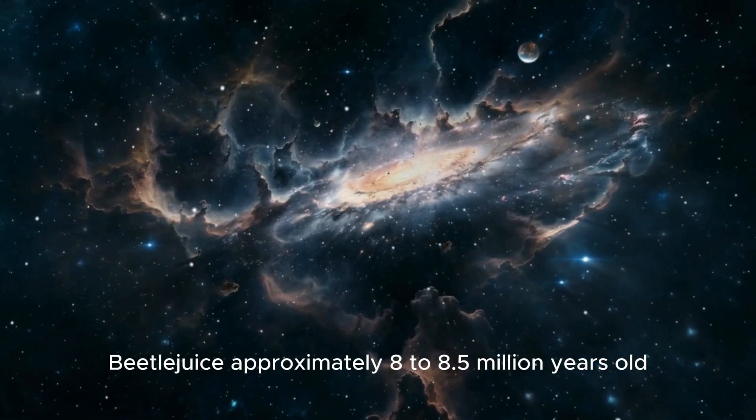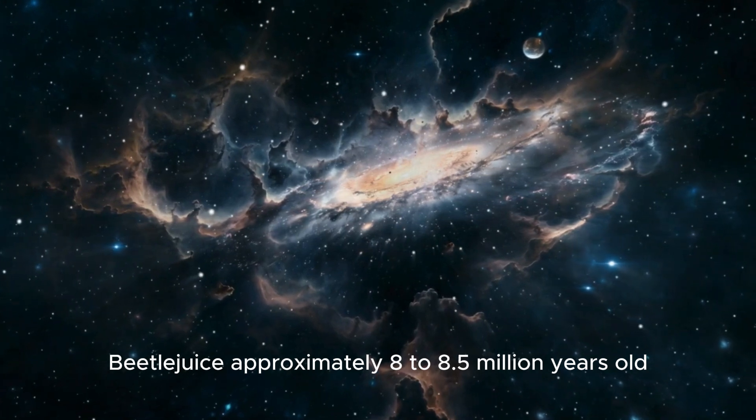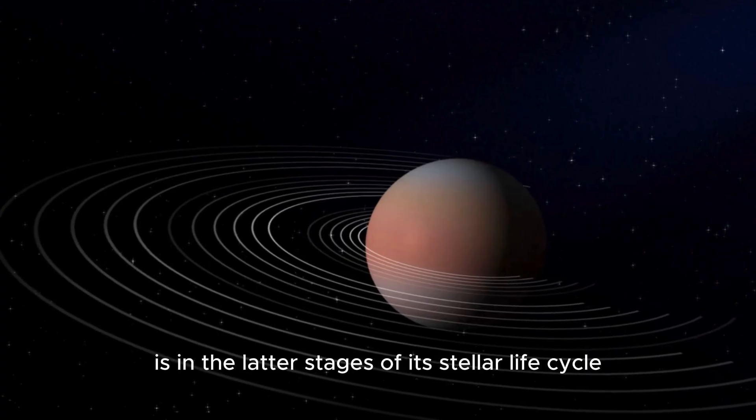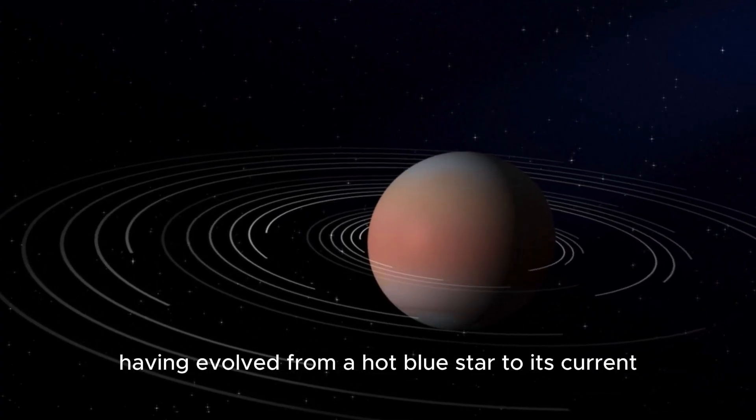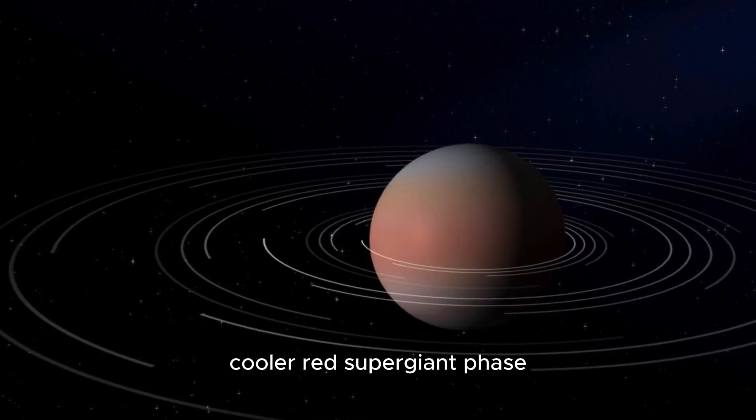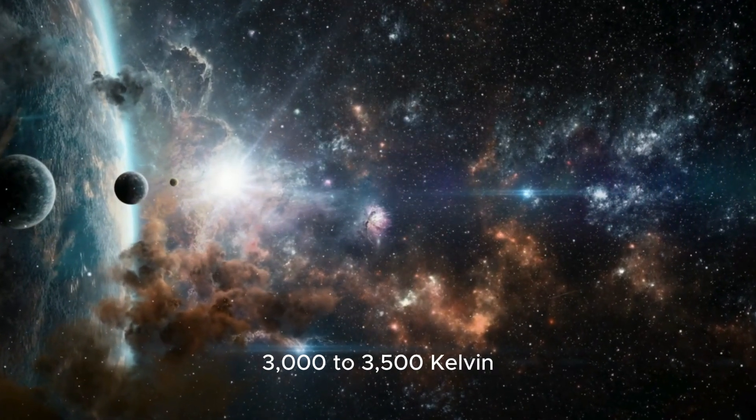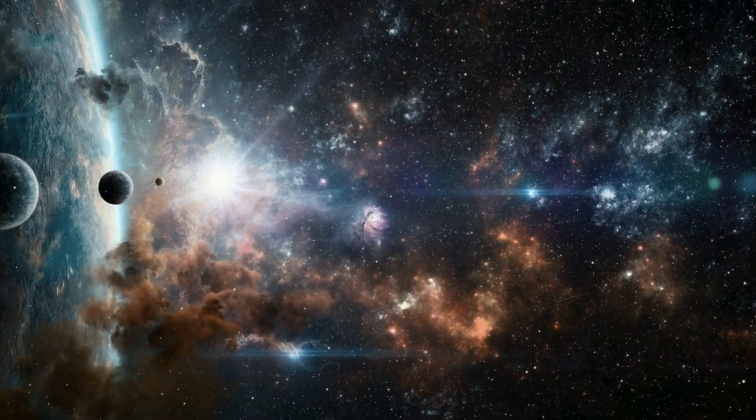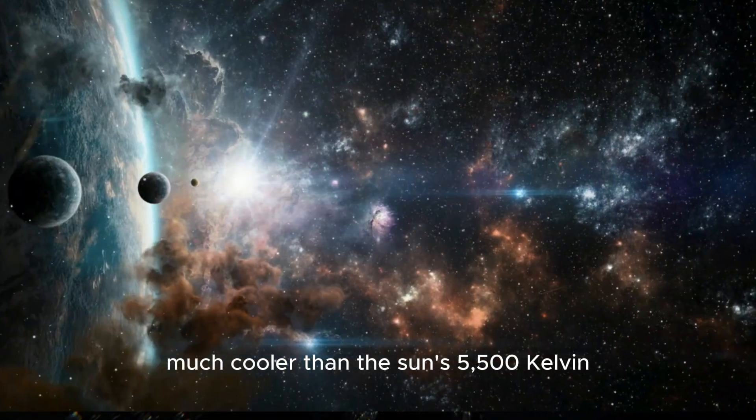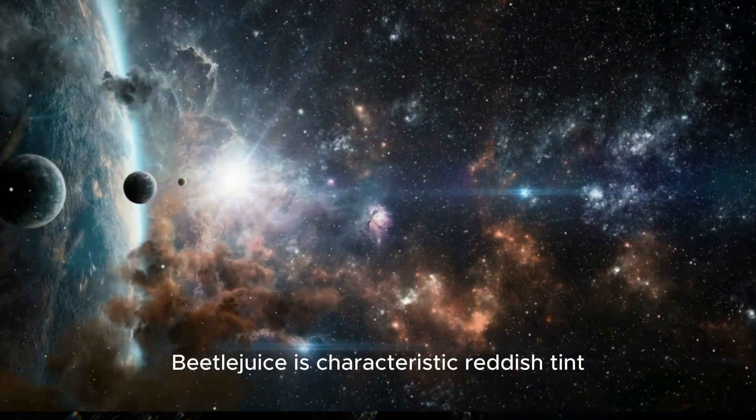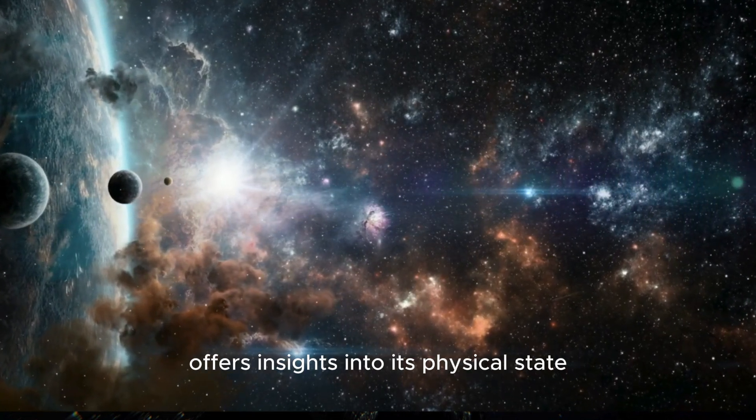Betelgeuse, approximately 8 to 8.5 million years old, is in the latter stages of its stellar life cycle, having evolved from a hot blue star to its current cooler red supergiant phase. With a surface temperature of around 3,000 to 3,500 Kelvin, much cooler than the sun's 5,500 Kelvin, Betelgeuse's characteristic reddish tint offers insights into its physical state and internal processes.